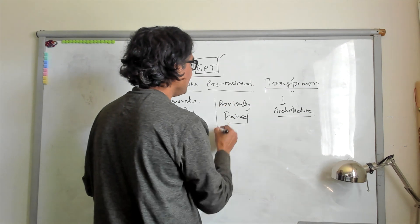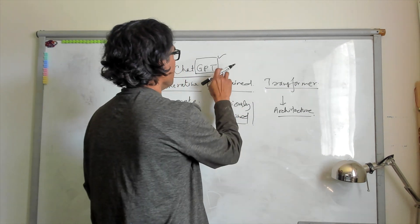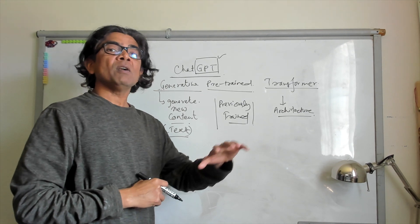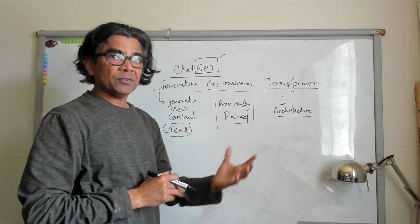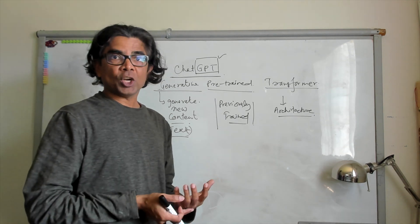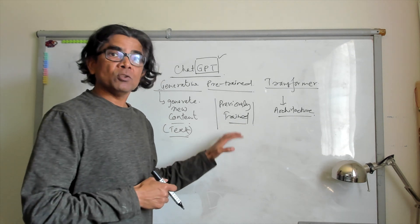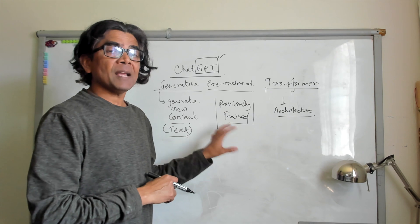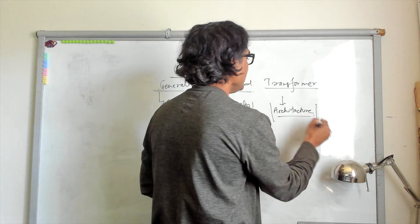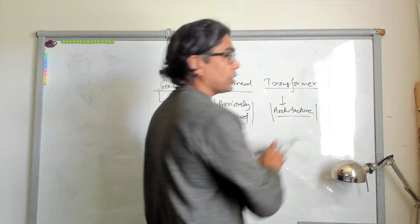Pre-trained means previously trained. It means the model being used has already been trained. The model you are using is not training at the given time. By the time you are using the model, that model has already been previously trained. And finally, it is using the Transformers architecture.